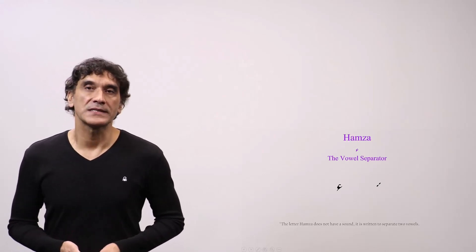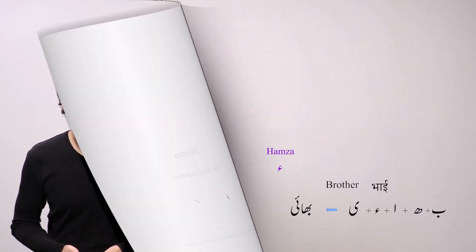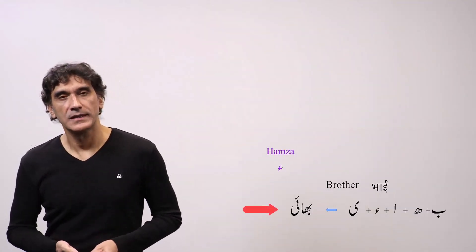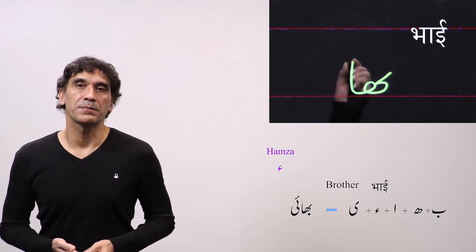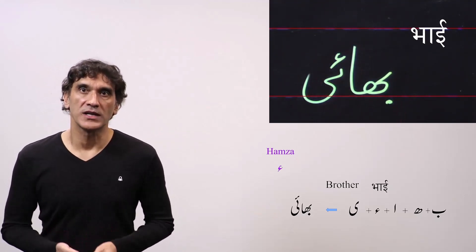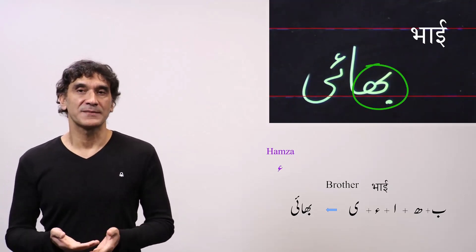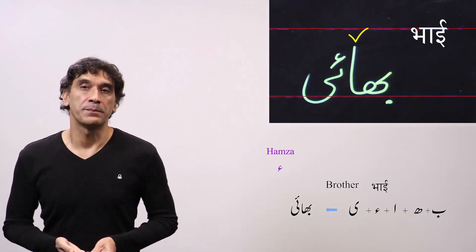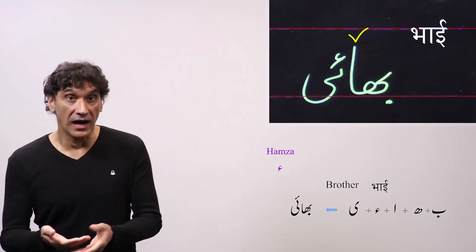Let's take some examples — it will be easier to follow the use of Hamza then. The first word is Bhai, meaning 'brother.' The spelling is Be plus Do Chashmi He plus Alif plus Hamza plus Chhotiye. Be plus Do Chashmi He makes the aspirate Bha, and Alif after Bha adds an A matra to Bha and makes it Bha.